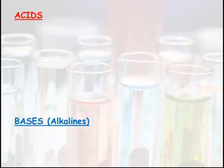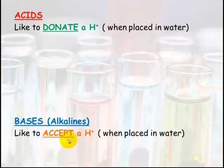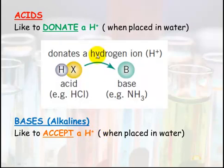Acids and bases: acids like to donate a hydrogen ion when placed in water. With acids and bases, we're always talking about these species when they're aqueous. Acids like to donate a hydrogen ion, or we say a proton, because a hydrogen ion is just a proton. Bases, also known as alkalines, like to accept a hydrogen.